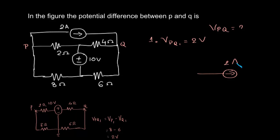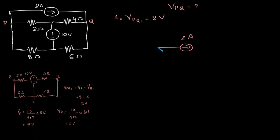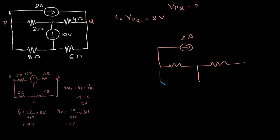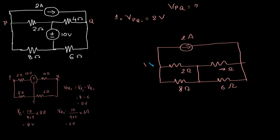We have a 2 ampere current source. We have the 2 ohm and 4 ohm resistances. The voltage source is short-circuited. We have the 8 ohm here, 2 ohm here, and the 6 ohm. Let this voltage be vp2 and this be vq2.